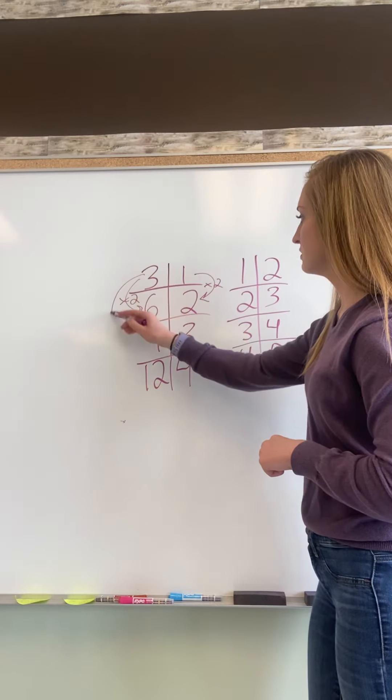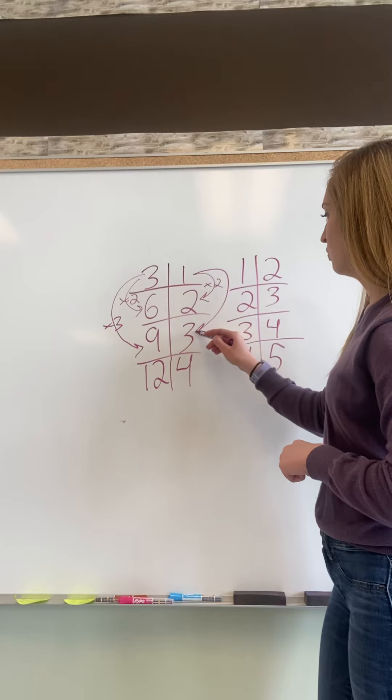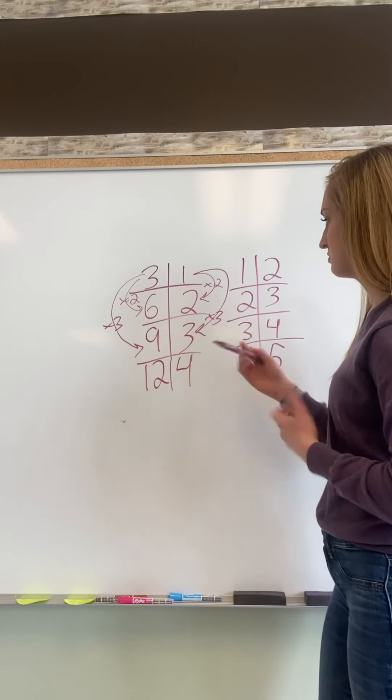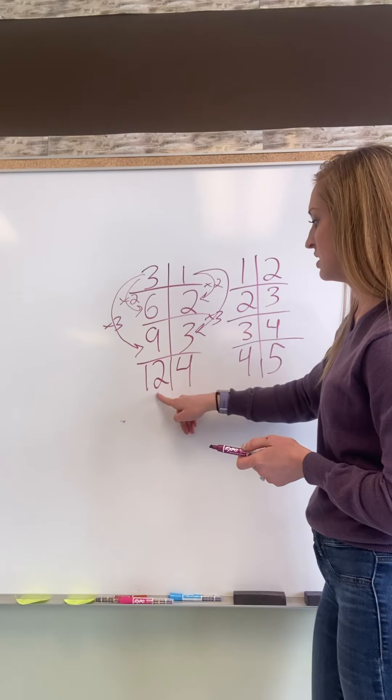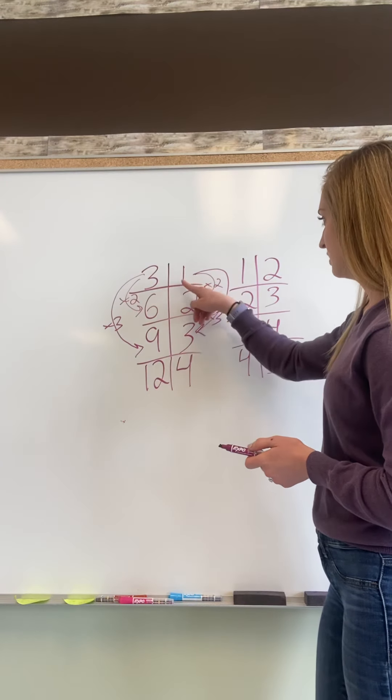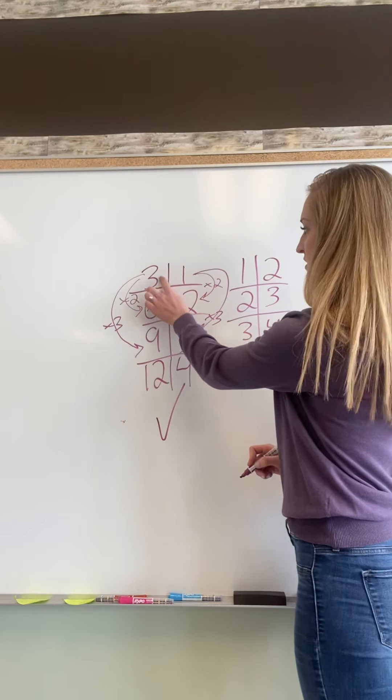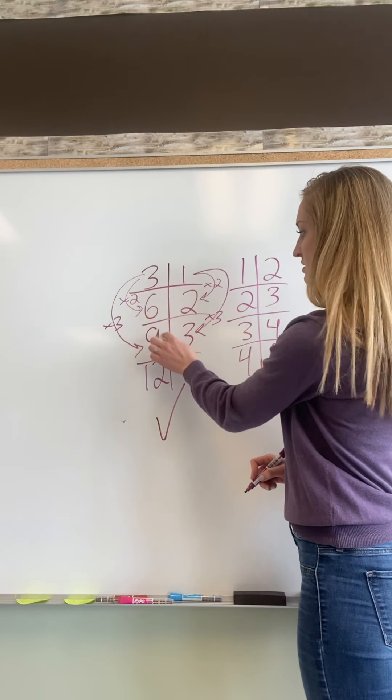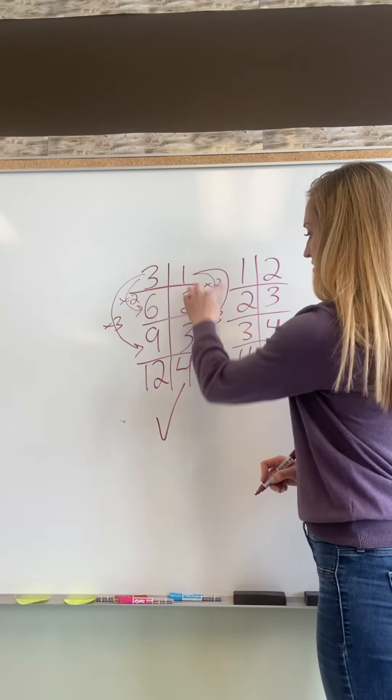Now three, so three times three is nine, one times three is three. Looking good still. Three times four is twelve and one times four is four. So this one is a ratio table because what I'm multiplying this number by to get this number and this number and this number is the same as what I'm multiplying this number by to get to the next one.